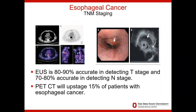A PET-CT scan is a survey of the entire body to look for metastatic spread of the esophageal cancer to other parts of the body and also to the regional lymph nodes. This will tell clinicians the stage of the tumor and will be a guide for treatment.